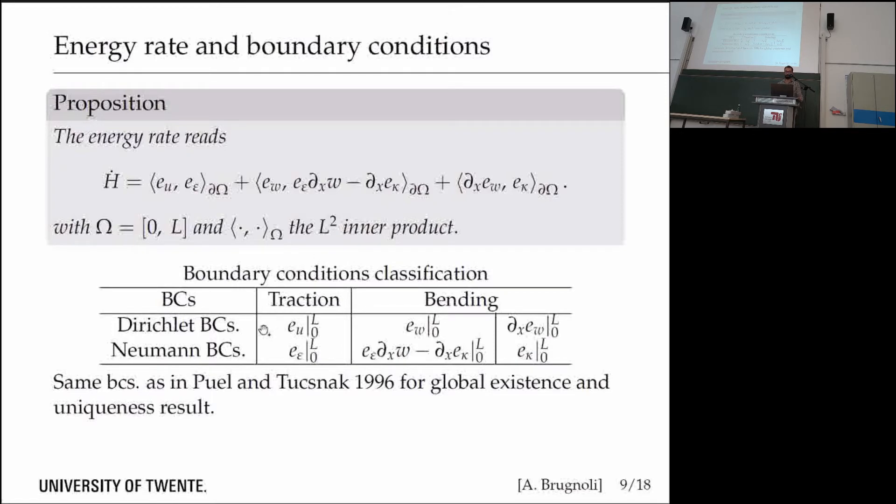We can collect all these boundary conditions and classify those in the classical sense of Dirichlet and Neumann boundary conditions. For traction we have as Dirichlet the horizontal velocity at the boundary, or as Neumann the axial stress.